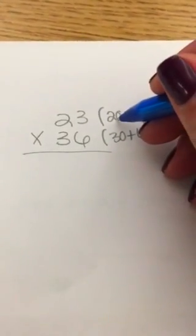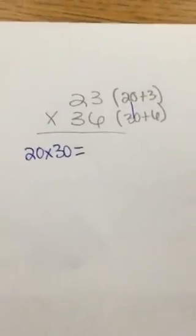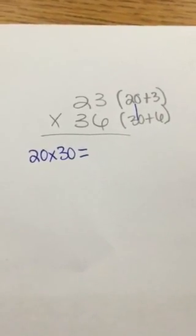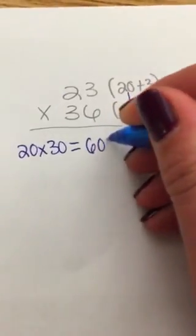So the first thing I'm going to do is go 20 times 30 and I'm going to write it right here on my paper with the pen or colored pencil. And I know that 2 times 3 is 6, 2 multiples of 10 is 600. So I'm going to go ahead and write that on my paper.